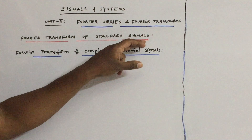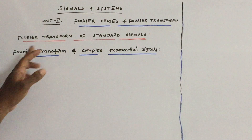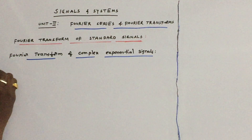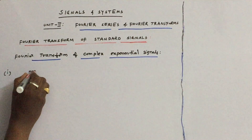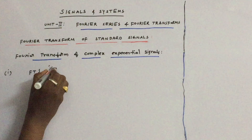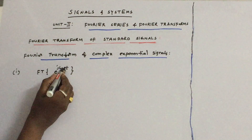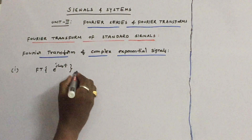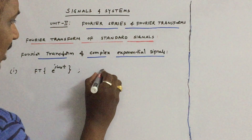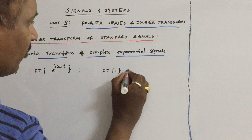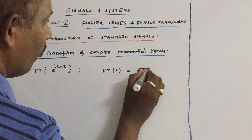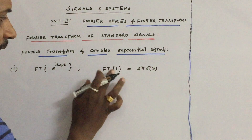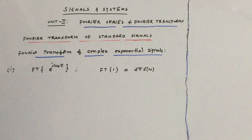By discussing the Fourier transform of standard signals, we will see another standard signal. Find the Fourier transform of complex exponential signals. First, let us find the Fourier transform of e^(jω₀t). As you know, e^(jω₀t) is a complex exponential signal of frequency ω₀. To prove this, first find the Fourier transform of the constant 1, which we derived in the previous class: the Fourier transform of a constant is 2π·δ(ω).